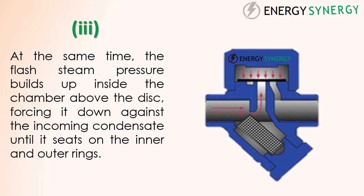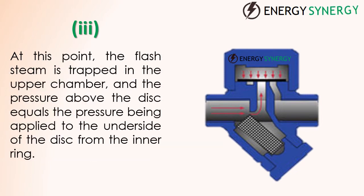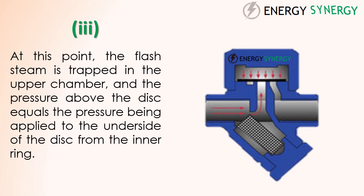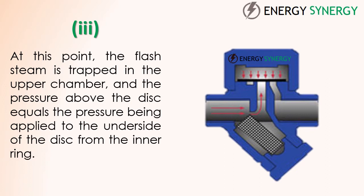The disc is forced down against the incoming condensate until it seats on the inner and outer rings. At this point the flash steam is trapped in the upper chamber, and the pressure above the disc equals the pressure being applied to the underside from the inner ring. However, the top of the disc is subject to a greater force than the underside, as it has a greater surface area.